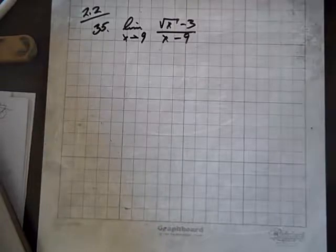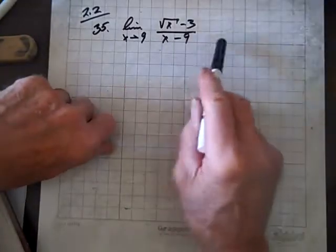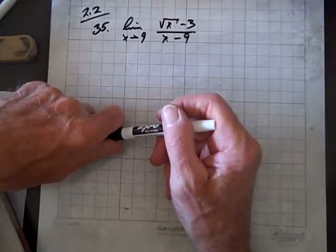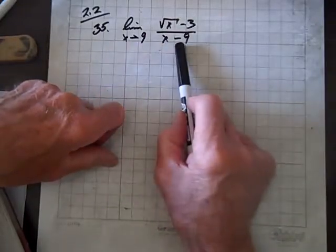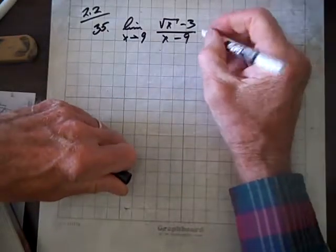Now we're doing question 35 on section 2.2 and we have to find this limit as x goes to 9. Well, if we let x be 9, we have division by 0 and that's undefined.